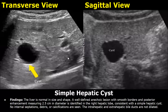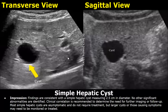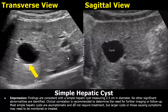We are only focusing on liver pathologies, so the findings and impressions are just related to the liver — it is not a complete abdominal ultrasound report. For the impression, mention that the findings are consistent with a simple hepatic cyst and include the size of the cyst. If there are no other abnormalities, write 'no other significant abnormalities are identified.' You must also write 'clinical correlation is recommended' because a diagnosis is not completely made on ultrasound alone.